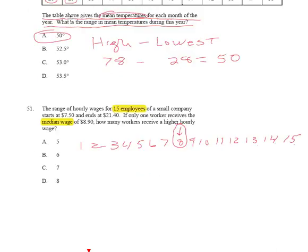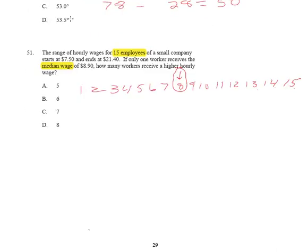Now, the next one gives you a range and wants you to find the median, the middle number. They throw a lot of distractors in there. So let me underline the whole thing first. For question 51,